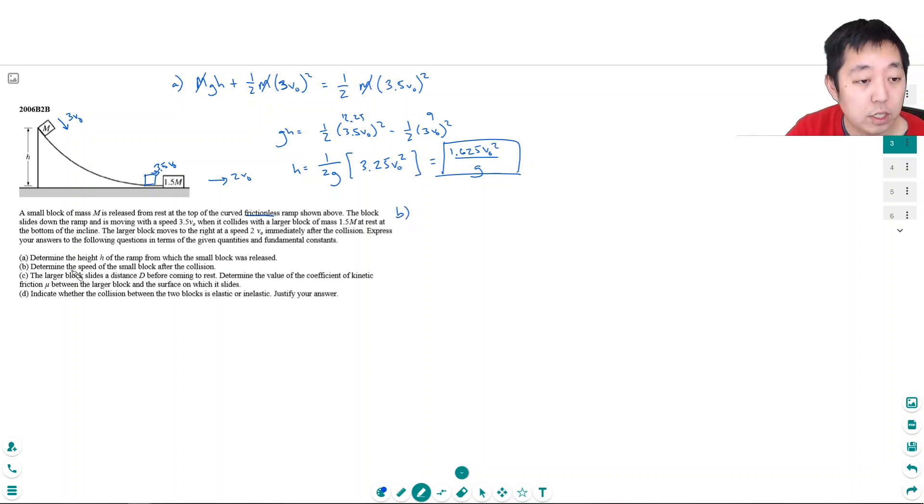Part B, determine the speed of the small block after the collision. Well, the momentum has to be conserved before and after the collision. So initially, the momentum before the collision is just, this is the only thing that has momentum. It has MV, which is M times 3.5V0. And that has to equal the momentum after, right?